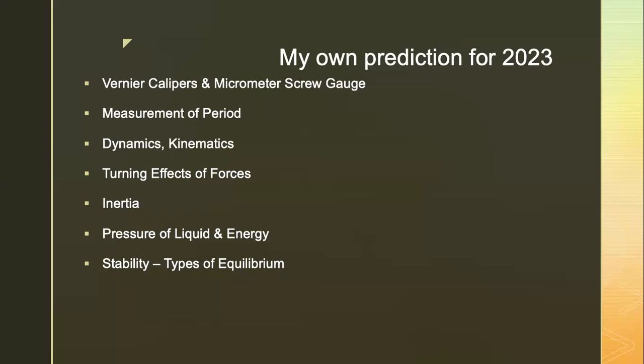Power could be tested in a different way — for example, someone pulling a machine, doing push-ups, or running up the stairs. Dynamics and kinematics are listed generally, so there could be a question on resultant force and Newton's laws. Turning effects of forces was not in Paper 2, so there's a high chance this concept will be tested this year. Inertia has not appeared for some time. Pressure of liquid didn't appear last year, so take note. Questions on energy — work done or power — are also likely. Stability and types of equilibrium are worth noting too.